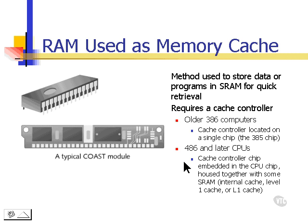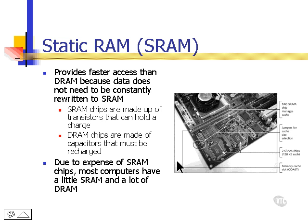The difference between SRAM and other memory is that SRAM provides faster access because it doesn't need to be constantly rewritten. Data is held in SRAM in transistors, which can hold a charge. In DRAM, the chips are made of capacitors, which must constantly be recharged. Due to the expense of SRAM, most computers today have very little SRAM — mostly just used for cache — and a lot of DRAM.